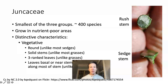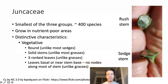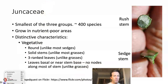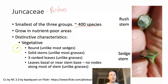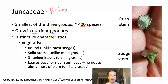Now let's talk specifically about Juncaceae — the rushes. This is the smallest of the three families, with only about 400 species. They tend to grow in nutrient-poor areas, suggesting they are good at surviving where there are low nutrients but are not competitive when the area becomes more nutrient-rich. As a result, a conservation strategy for Juncaceae would be to prevent eutrophication or addition of nutrients by human activities.